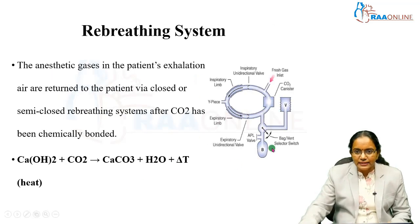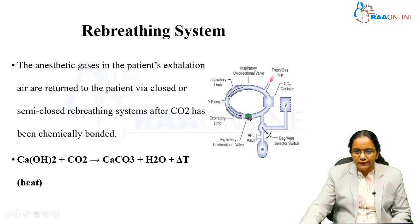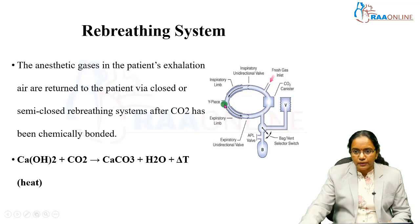This is a classic example of a re-breathing system where the anesthetic gases in the patient's exhalational air are returned back to the patient. This is the Y piece, this is the inspiratory limb, and this is the expiratory limb. There is a one-way inspiratory unidirectional valve and a one-way expiratory unidirectional valve. This is the fresh gas inlet where the fresh gas flow enters. It is taken via the inspiratory limb into the patient, and from the patient it comes back through the expiratory limb into the carbon dioxide canister.